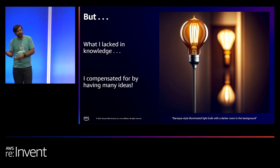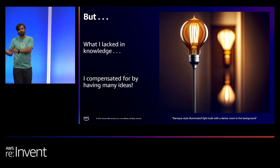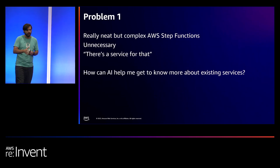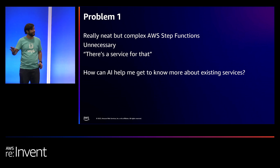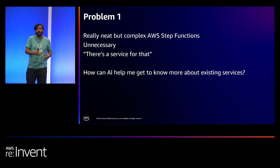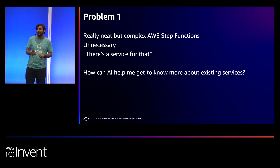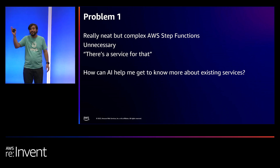For the rest of this presentation, we're going to be discussing problems I was trying to solve, how I tackled them, and what the outcome was. Problem number one: I created this super awesome AWS Step Functions workflow that I was really excited about. I was so excited that I wrote an article about it. I published it, I had people comment on it, and I was even more excited — until I read a comment that said, 'there's a service for that.' I spent hours and hours on it, just to find out it was a waste of my time.